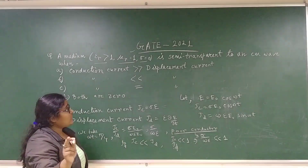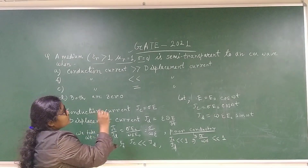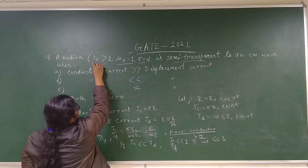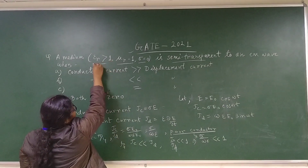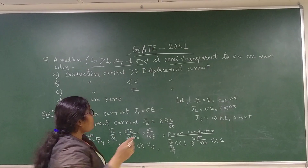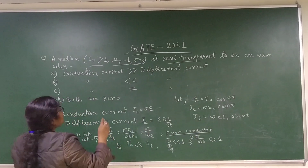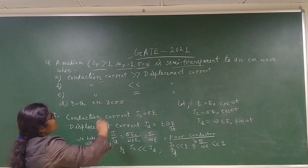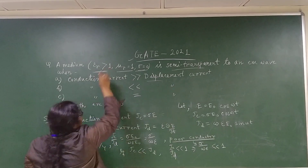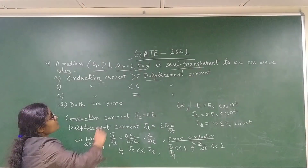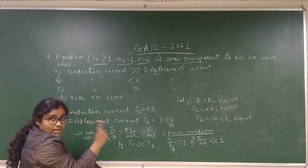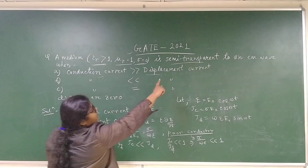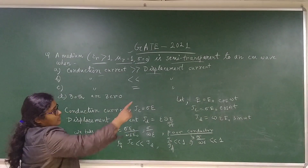Ideally, you should take only one second to find out the answer. Since it is given that the medium is semi-transparent, and ε_r is greater than 1 and σ is 0, the conduction current is directly related to σ and the displacement current is directly related to ε_r. So the conduction current must be much less than the displacement current for a semi-transparent optical medium.